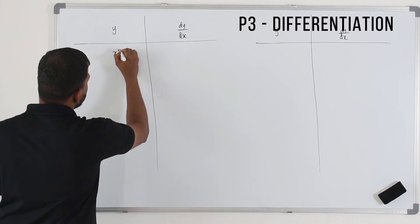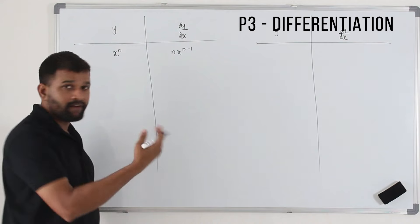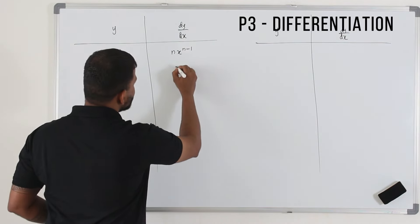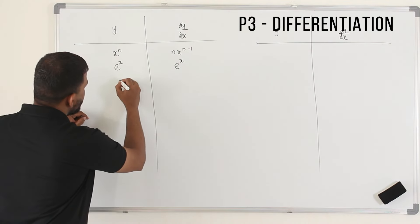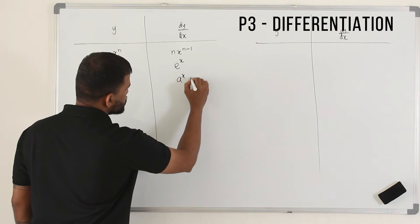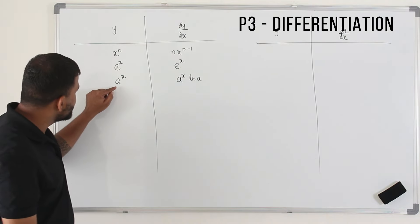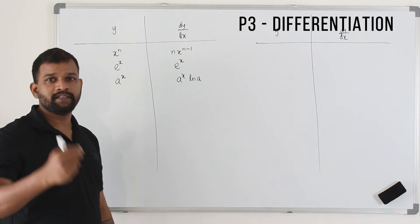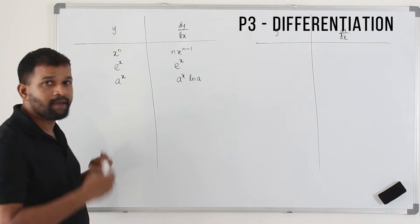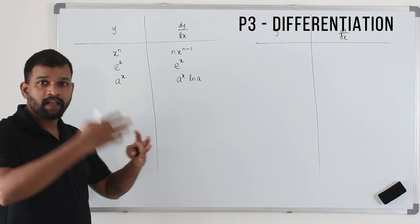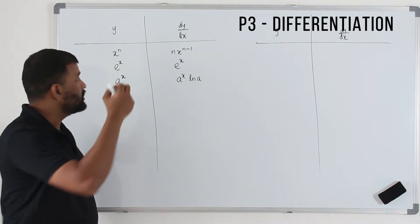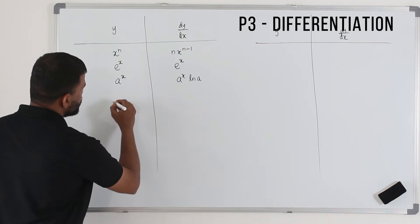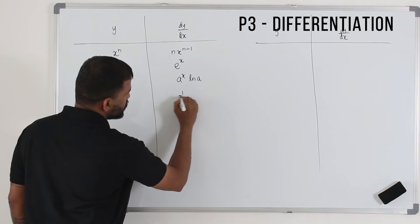The first rule: when you have x power n, the derivative is nx power n minus 1 — we learned this in P1 and P2. The second rule: when you have the exponential function e power x, the derivative is the same, e power x. And if you have a power x, the derivative rule is a power x times ln a. The difference is that a can be any real number, whereas e is a particular irrational number called Euler's number — similar to pi. You can find e in your calculator.